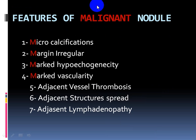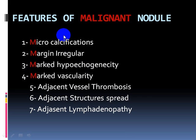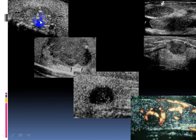Features of malignant nodules include: microcalcification, irregular margins, marked hypoechogenicity, marked vascularity, adjacent vessel thrombosis, adjacent structure spread, and adjacent lymphadenopathy. These are associated with malignant disease in general, not only in thyroid disease. The examples show microcalcification, hypoechoic and ill-defined margins, increased vascularity of the entire nodule, and heterogeneous hypoechogenicity.